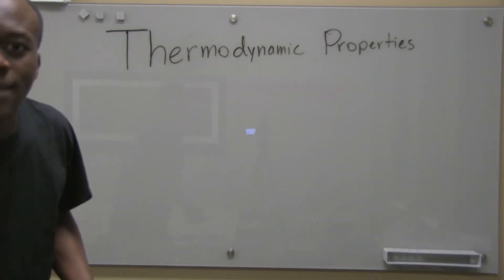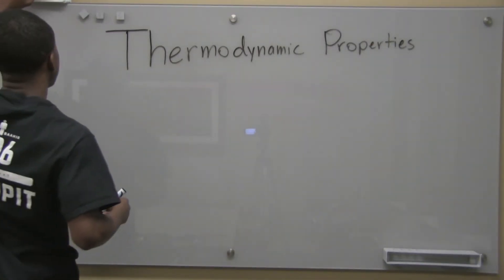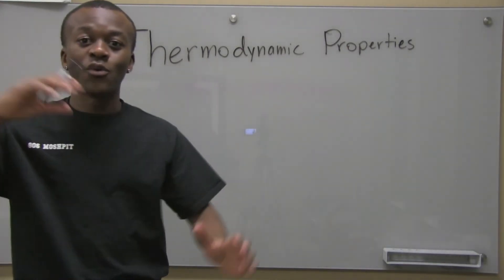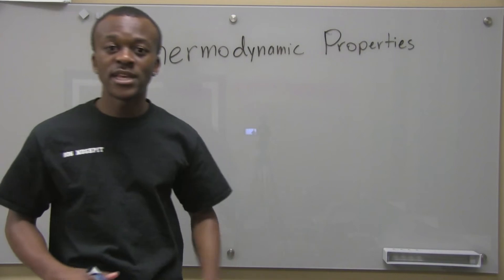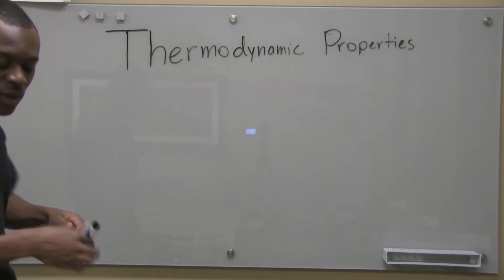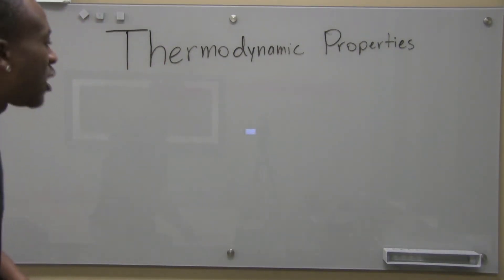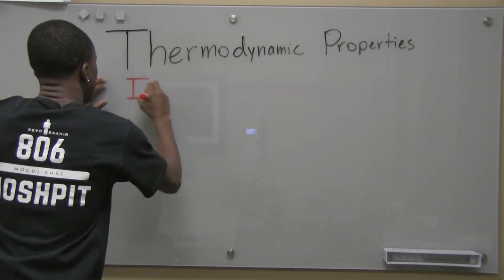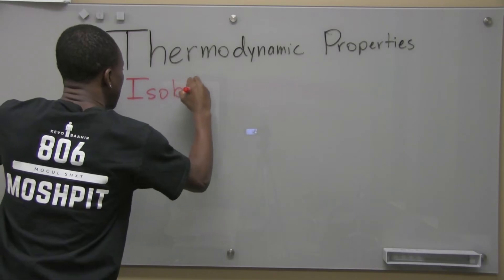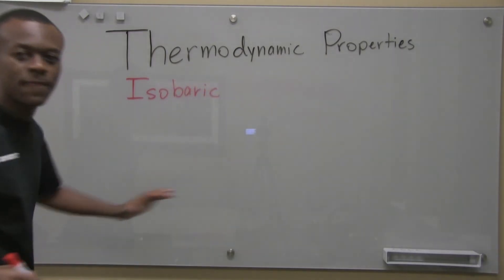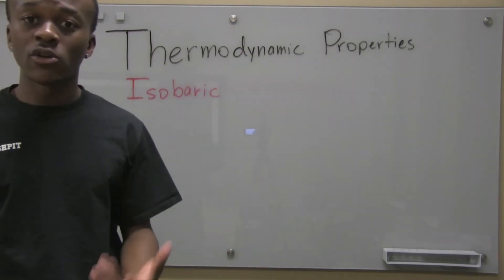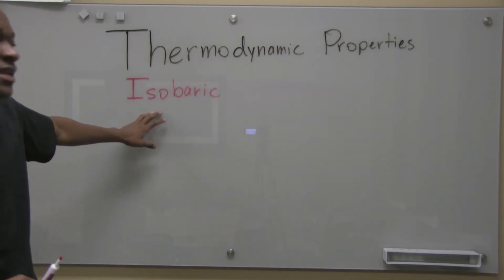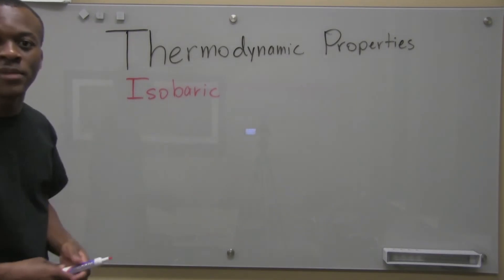Now, there are certain names that we can give to processes to make them more easily recognizable. So we have different names for these. One would be isobaric or isobaric. Some people pronounce it isobaric. But remember how I talked about bar in terms of pressure? We can look at iso meaning the same and bar meaning pressure.